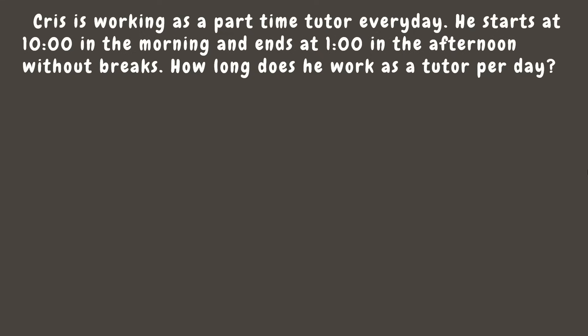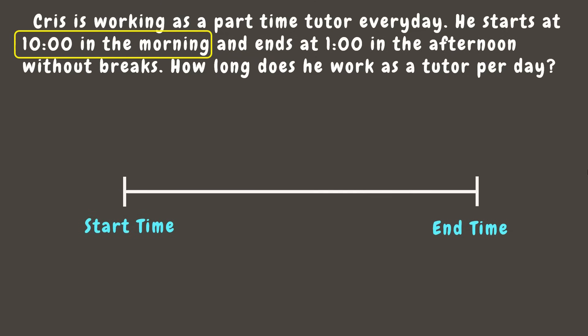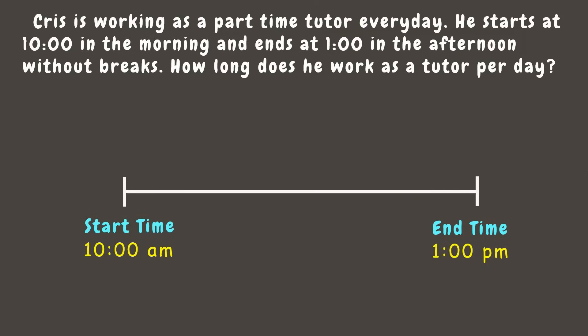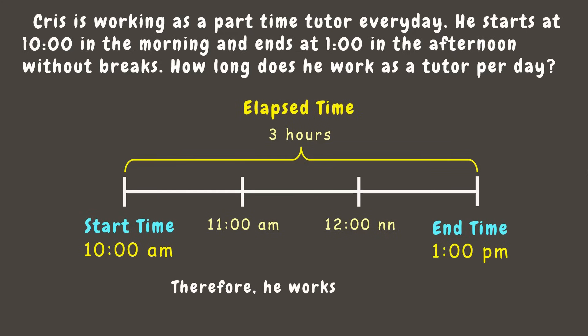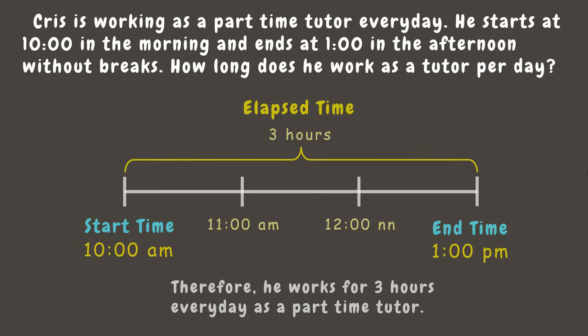Chris works as a part-time tutor, starting at 10:00 AM and ending at 1:00 PM. Let's solve with a number line. Adding 1 hour to 10 AM gives 11 AM, another hour gives 12 noon, and one more gives 1 PM. Combining these, the total elapsed time is 3 hours. Therefore he works for 3 hours every day as a part-time tutor.